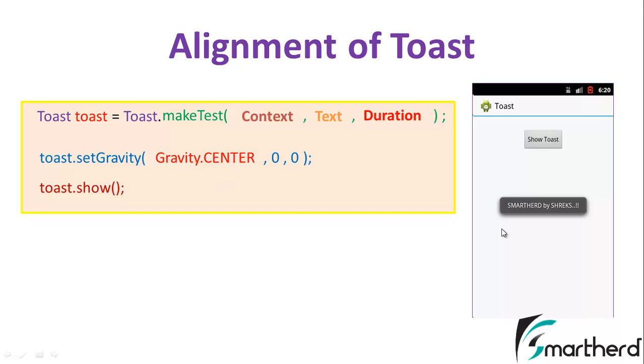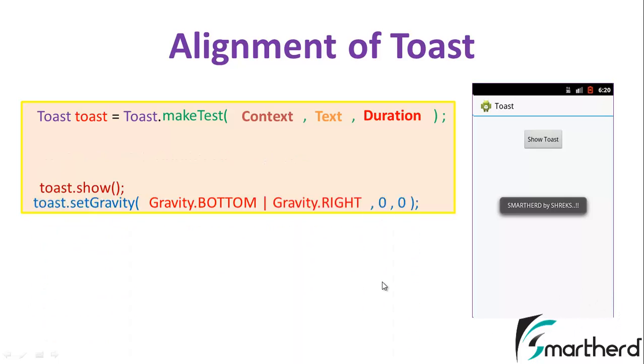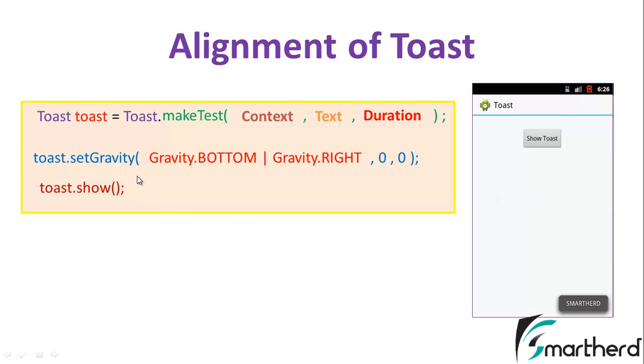Now suppose you want the Toast message right here. So how to specify and print the Toast message at the bottom right of the screen? For that you have to simply write setGravity inside the parameter Gravity.BOTTOM, then this is the bar sign or pipe sign, then after that Gravity.RIGHT.